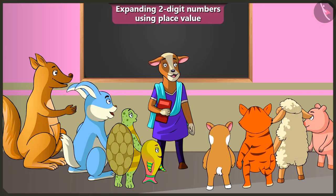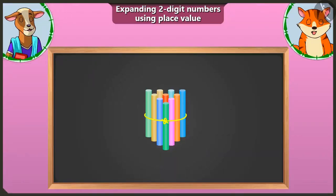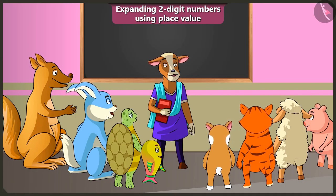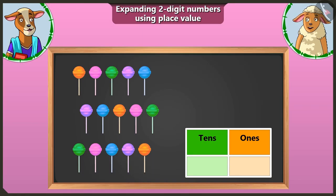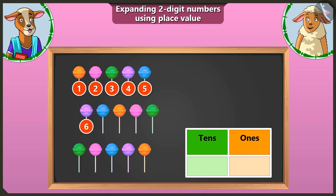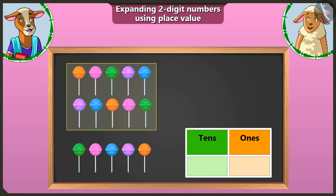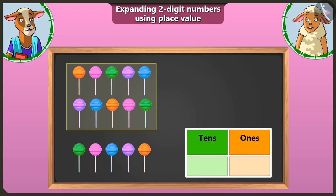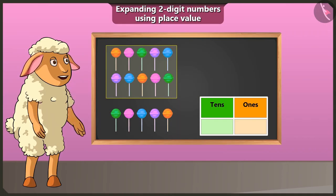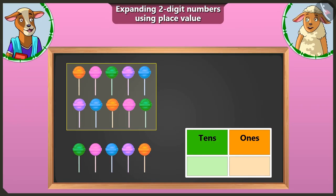Can you tell her how to write the figure ten here? Correct. But I will show you another way of writing it. Look, here is a lollipop. Let us make a bundle of ten of these and write the number. One, two, three, four, five, six, seven, eight, nine and ten. And let us make a group like this. This is a group of ten lollipops. We have one group of ten lollipops. That is why we will write one in the box of tens.